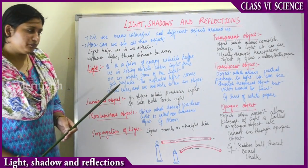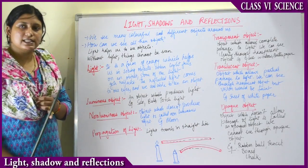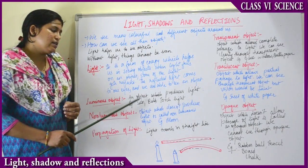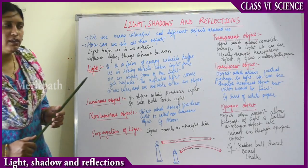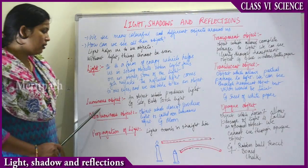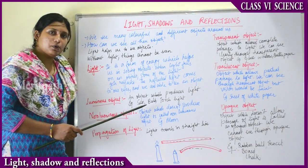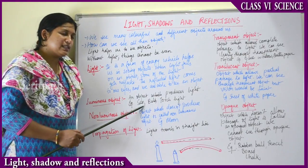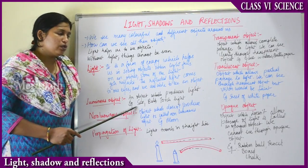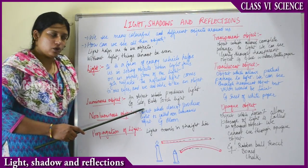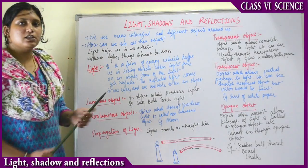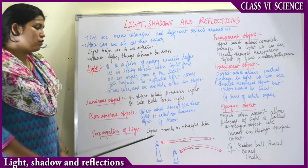What is a luminous object? An object which produces light is known as a luminous object — 'luminous' means light. That is why in TV advertisements for tube lights and bulbs, they use the term 'luminous.' Objects which produce light are luminous objects. Examples of luminous objects are the sun, bulb, torch light, and tube lights.